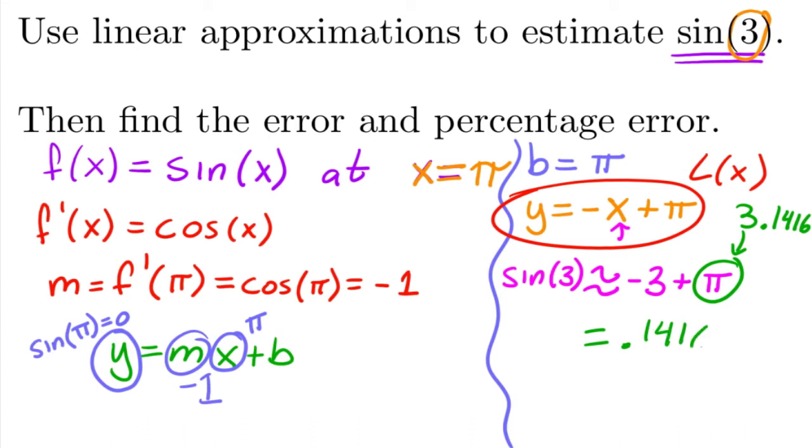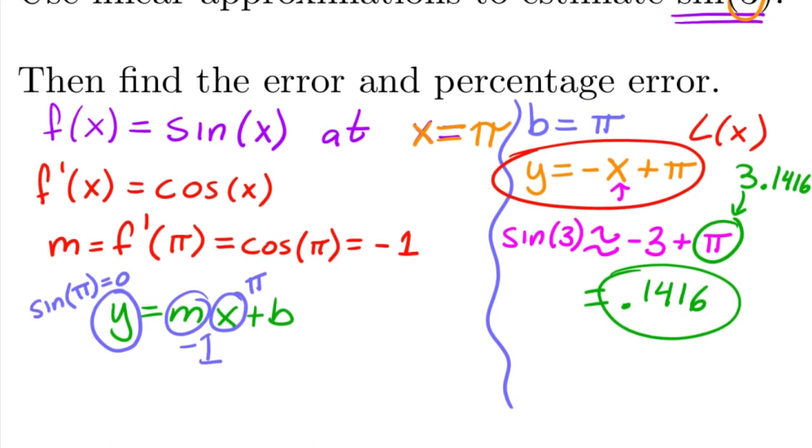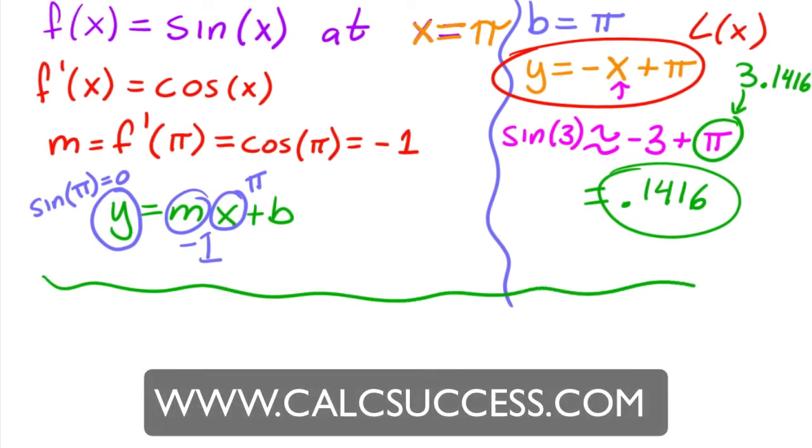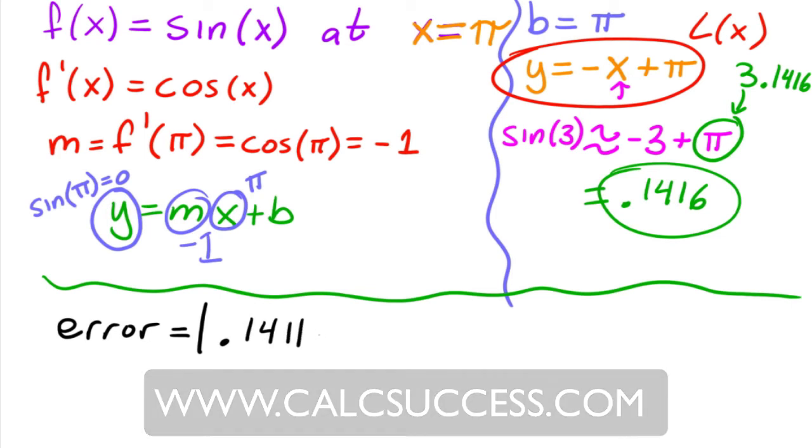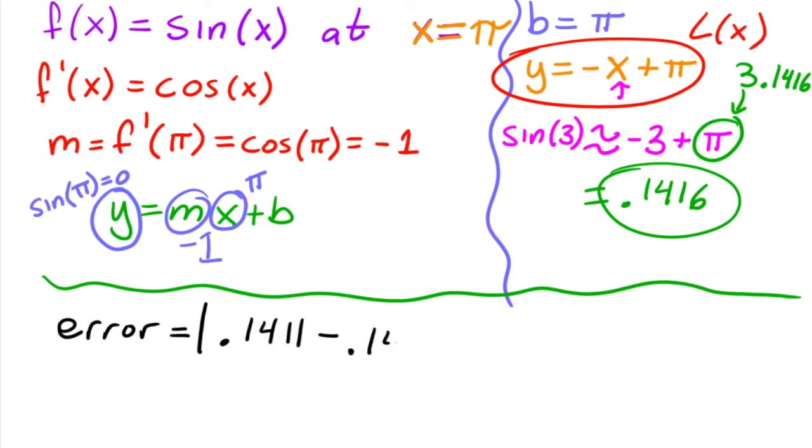So when we're looking for the error, the error is equal to the absolute value of the actual, which is 0.1411, minus the approximation, which is 0.1416. Well, this is just equal to 0.0005. And then the percent error...